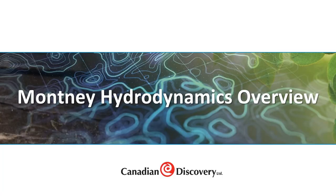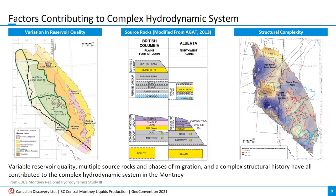Next, we'll provide an overview of hydrodynamics in the Montney before diving deeper into our study area. The Montney is a complex hydrodynamic system with variable reservoir quality, multiple source rocks, and complex structural history. The map on the left illustrates how the Montney is comprised of higher permeability, conventional reservoirs to the east, and a lower permeability, deep basin system to the west, with turbidites in higher permeability areas near the BC-Alberta border.